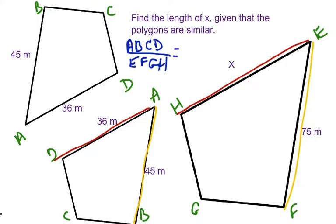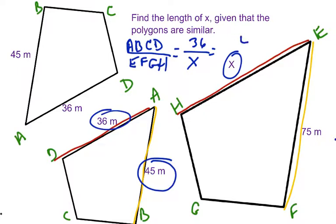Now we're ready to set up our proportion. We have 36 as our measurement for ABCD, and its corresponding side is X. So we have 36 over X equals—and again, I need to make sure that ABCD, my quadrilateral, the smaller one, is on the top because that's the order that I've chosen.